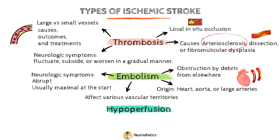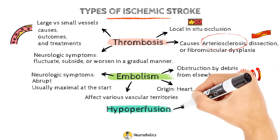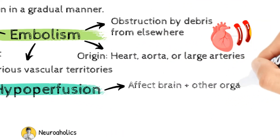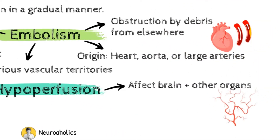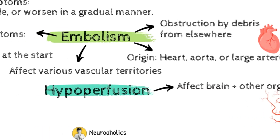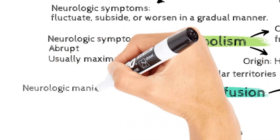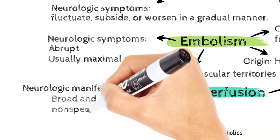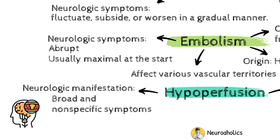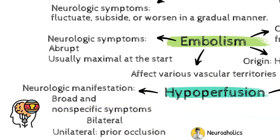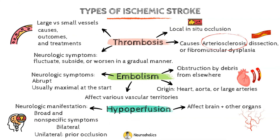The last type is systemic hypoperfusion. Systemic hypoperfusion is a more widespread circulation issue that affects the brain and possibly other organs. Patients have decreased cerebral blood flow that is more widespread and does not impact just one area. Neurological symptoms are often broad and nonspecific, unlike the other two types of ischemia. The neurologic manifestations are usually bilateral, although they might be asymmetric if there is prior asymmetrical cerebrovascular occlusive disease.